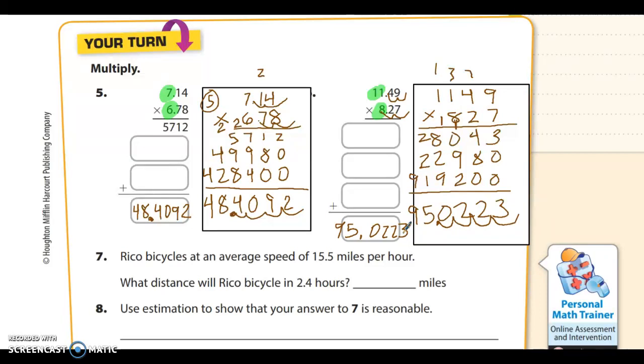Alright, let's go check out number 7. I've got enough room to do it up here. I've got Rico bicycles at an average of 15.5 miles per hour. What distance will Rico bicycle in 2.4 hours? How many miles is that? So that's going to be 15.5 times 2.4. We'll again pretend that they're whole numbers. We're going to do 155 times 24, and then we'll move the decimal over two places.